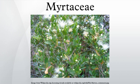Genera with capsular fruits, such as Eucalyptus, Corymbia, Angophora, Leptospermum, Melaleuca, and Metrosideros, are absent from the Americas, apart from the monotypic genus Tepulia in Chile and Argentina. Genera with fleshy fruits have their greatest concentrations in eastern Australia, Malaysia, and the Neotropics.